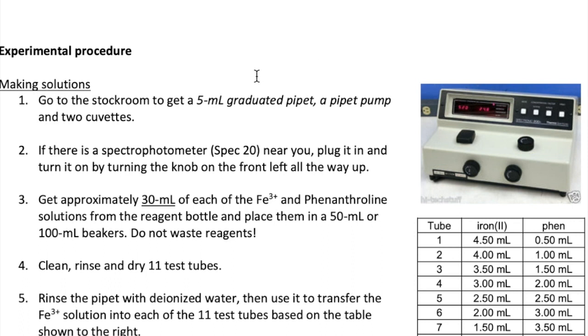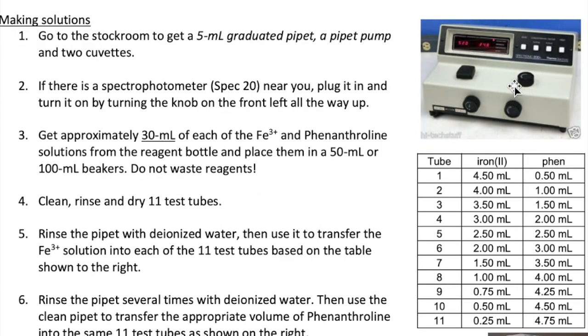First, have one student in your group check out a 5-milliliter graduated pipette, a pipette pump, and two cuvettes from the stockroom. If you have a Spec 20 on your bench, plug it in and turn it on by turning the knob marked here all the way to its maximum setting. This knob controls the intensity of the incoming light, so make sure it's set at the highest level possible.